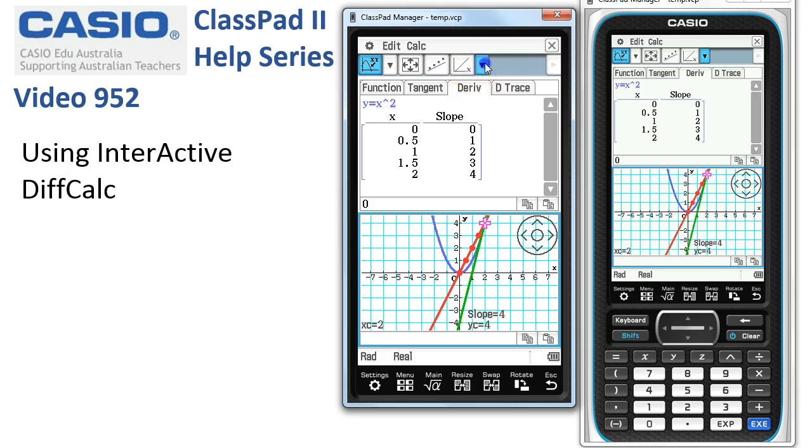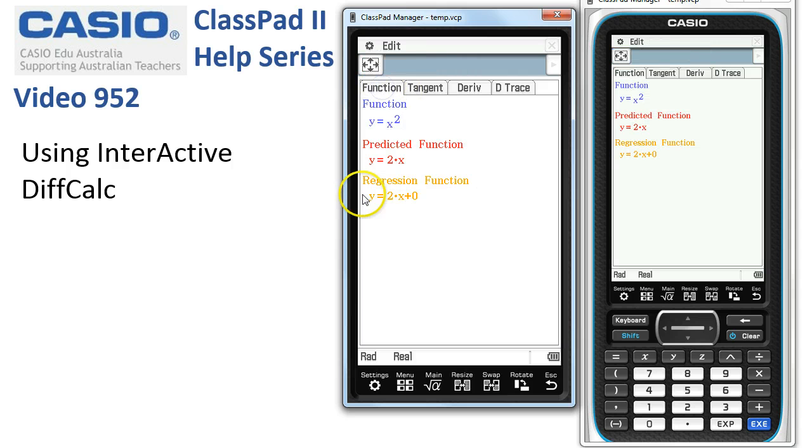If we weren't sure, there are various regression models that we can choose from here, linear, quadratic and so on. Let's just tap it and try it. You can see ClassPad's fitted an orange line through the points there. That looks pretty good and we could tap back to the function line here. You can see here's the one that we put in and here's the one that ClassPad put in in orange.